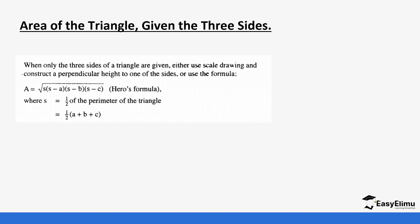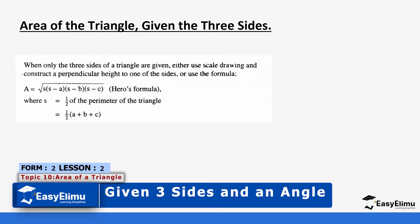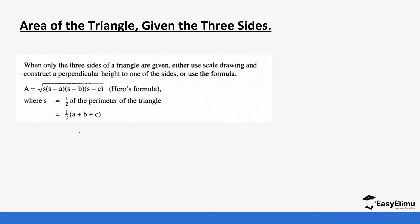When only three sides of a triangle are given, either we use a scale drawing to construct the perpendicular, or we use a formula. This is called Heron's formula: Area = √(s(s−a)(s−b)(s−c)), where s is the semi-perimeter of the triangle, calculated as s = (a + b + c) ÷ 2.